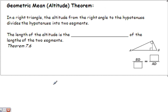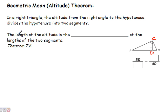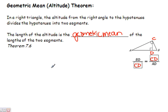There are a couple of theorems that go along with that. The first is the Geometric Mean Altitude Theorem. It states that in a right triangle, the altitude from the right angle to the hypotenuse divides the hypotenuse into two segments — we've got A, B, C, and D — and the length of the altitude is the geometric mean of the lengths of the two segments. So BD over CD equals CD over AD. There's going to be a little shortcut memory aid I'll teach you in just a second, so don't panic.